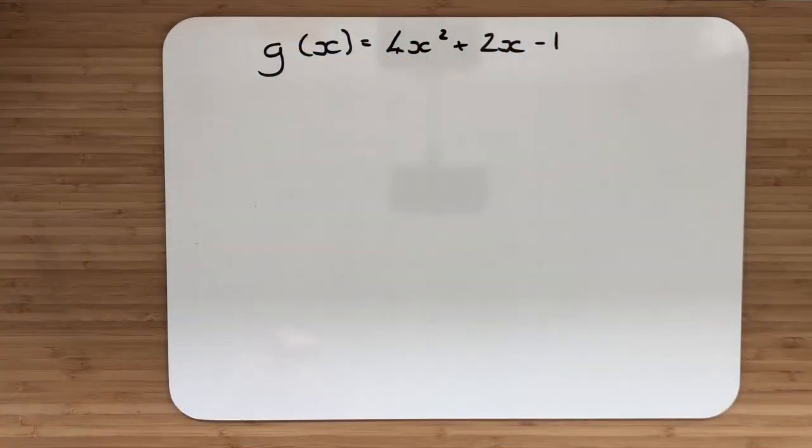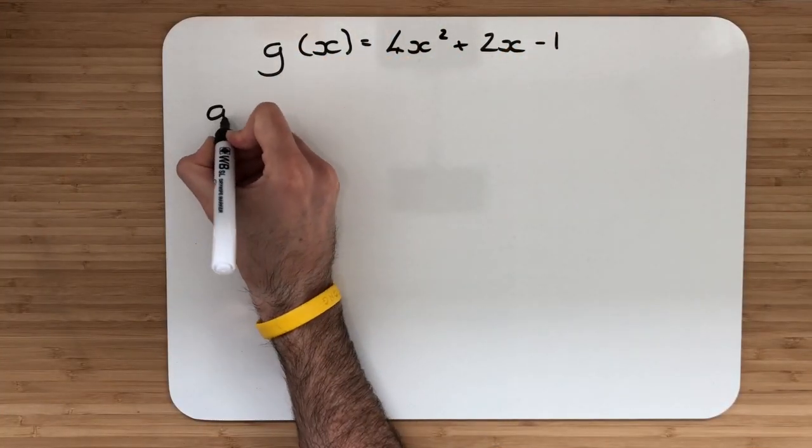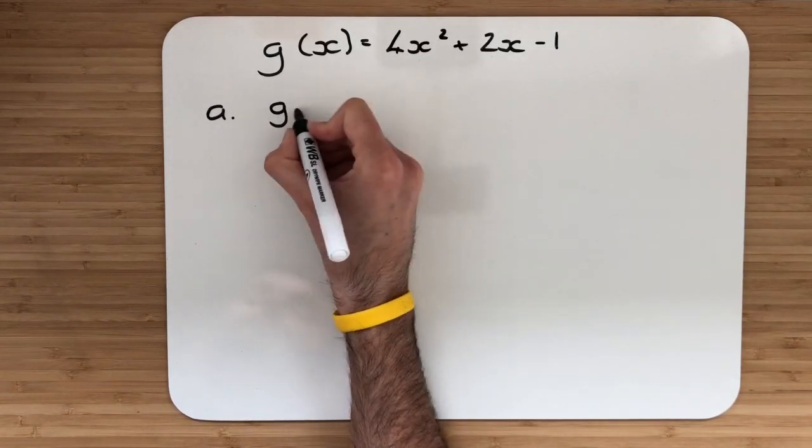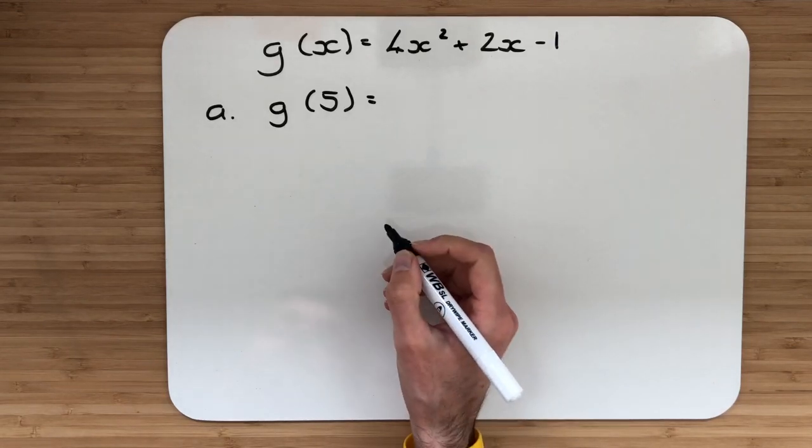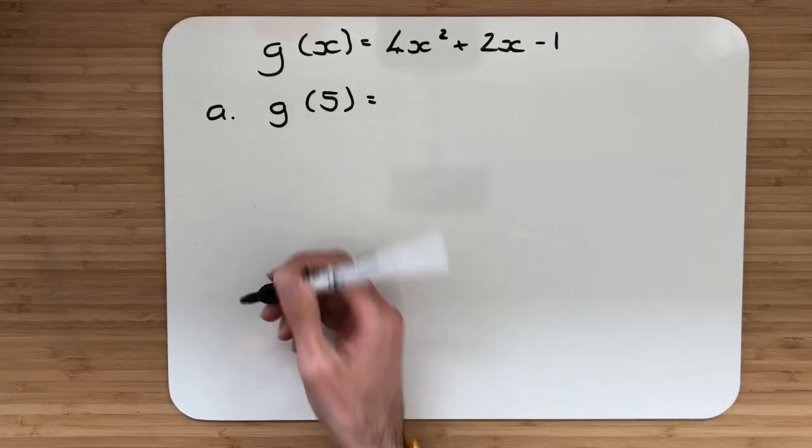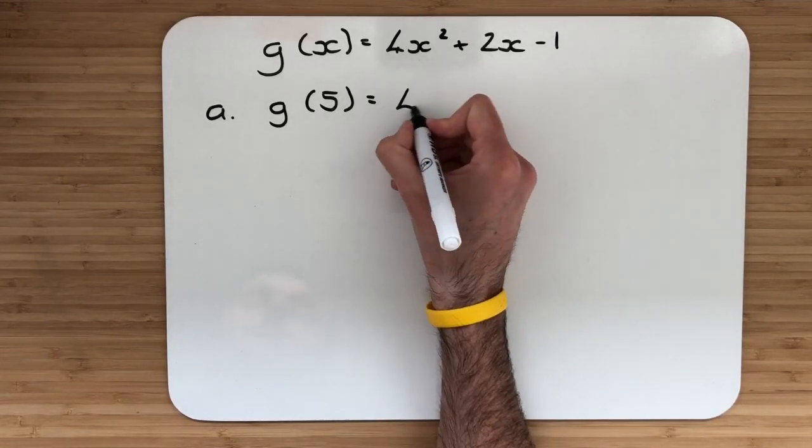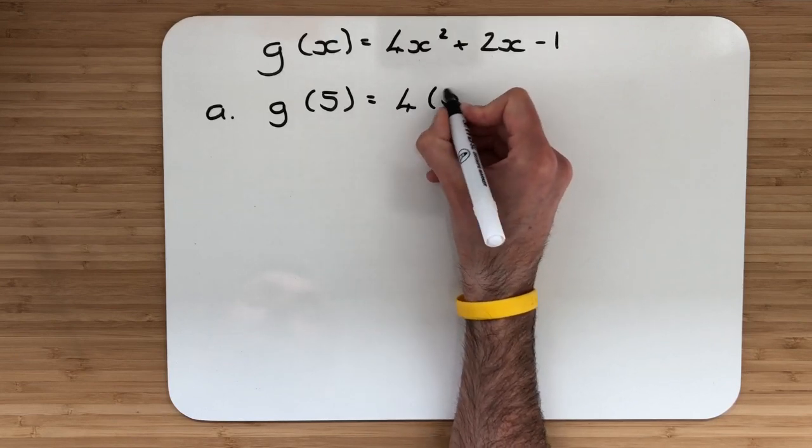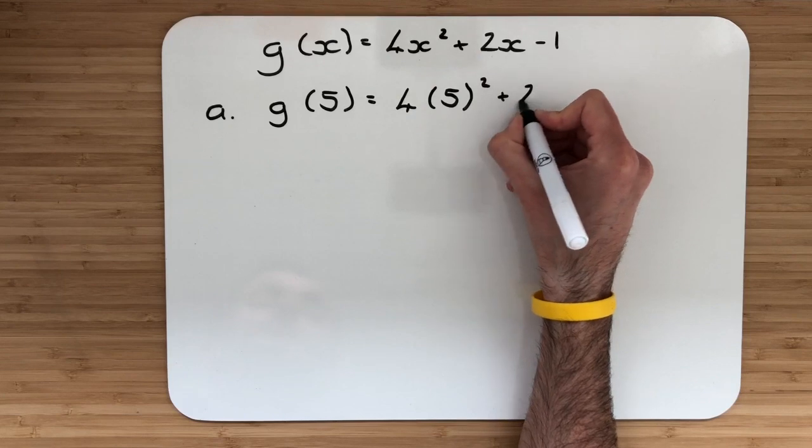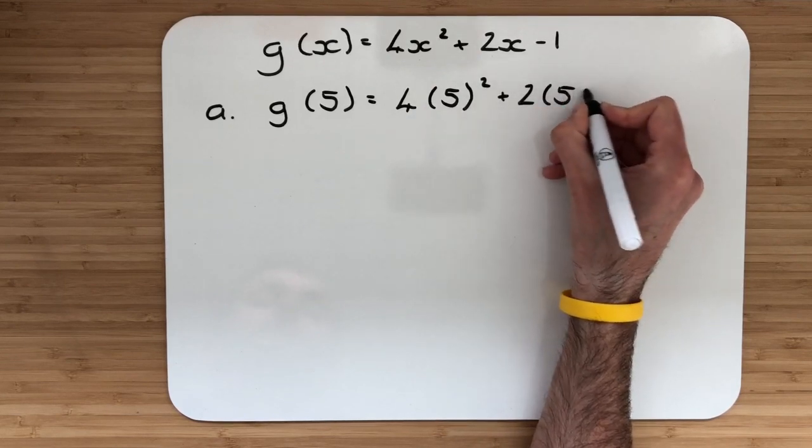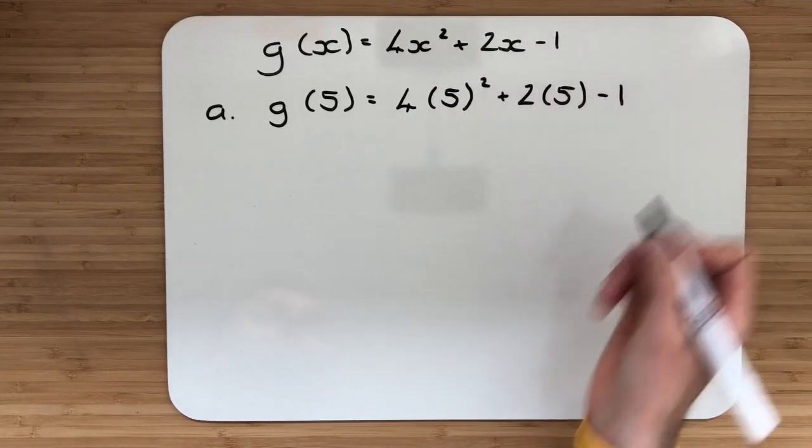In example 2, part a, we are looking to find the value of g of 5. So wherever there's an x in your function, you're going to replace that with the number 5. So I will have 4 multiplied by 5 squared, adding 2 multiplied by 5, and then subtract the 1.